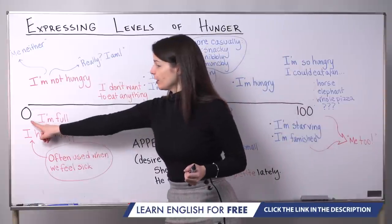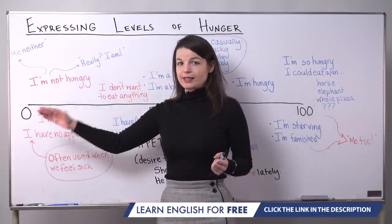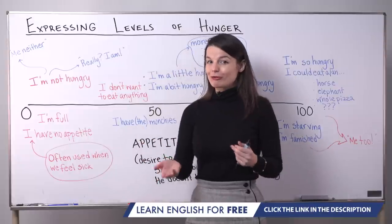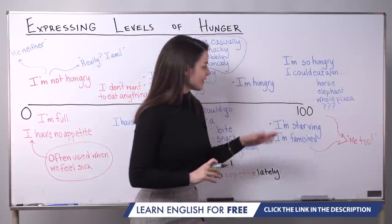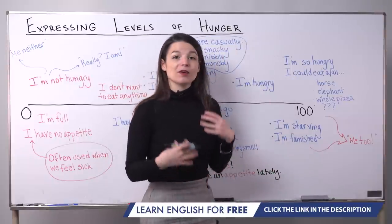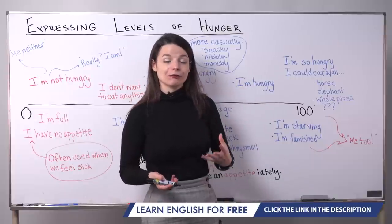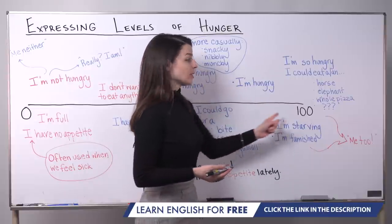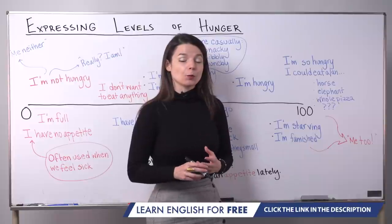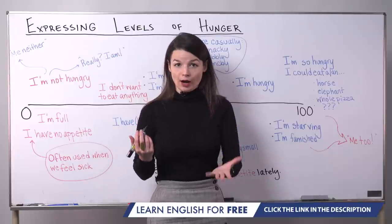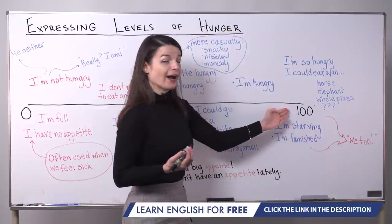At zero on the scale, a person does not want to eat — you are not interested in food, there's zero appetite. On the other hand, at 100, someone does want to eat; you have an appetite, a desire for food. We're going to use this scale to talk about different ways to express your hunger, starting here at 100%, where we have an appetite and want to eat.